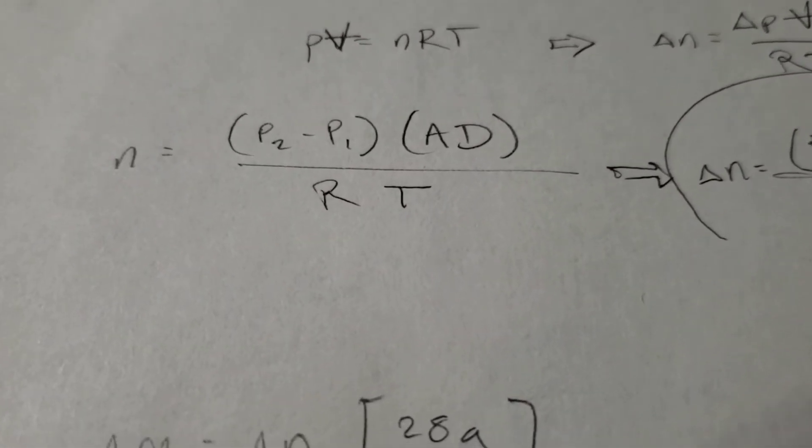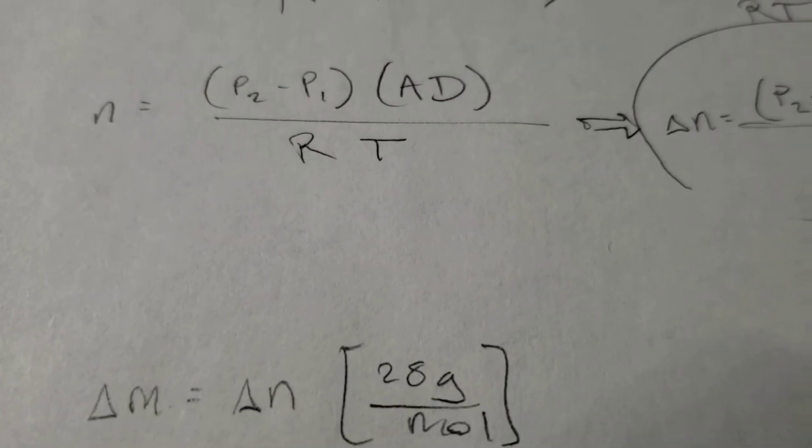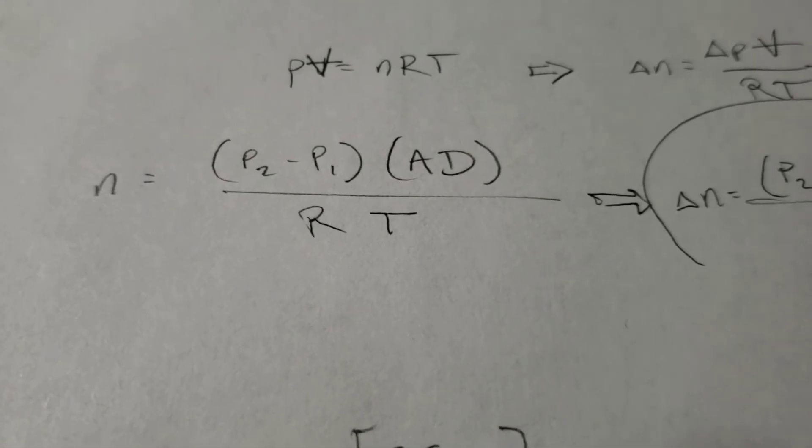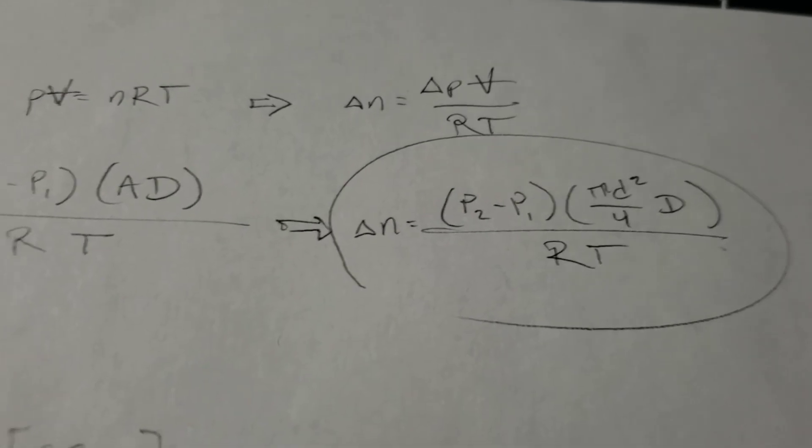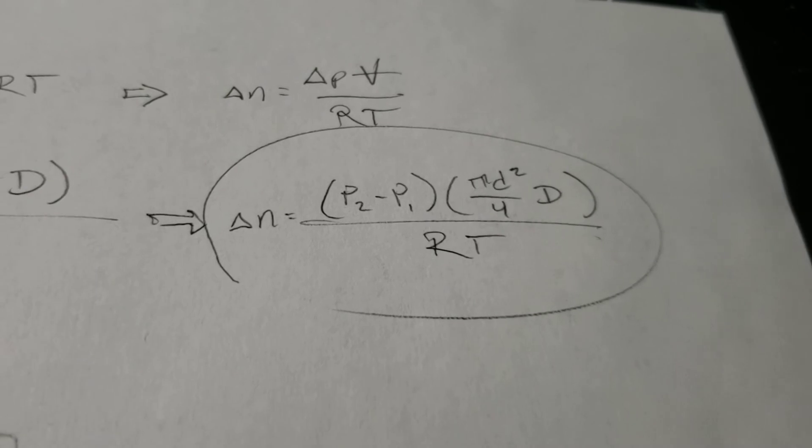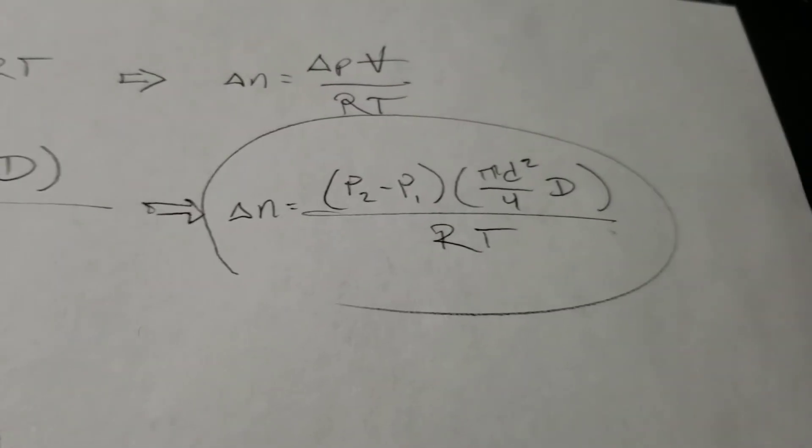And then all that's over RT. R is a constant that is given, or known, rather. And T is the temperature given the problem converted into Kelvin. So, expanding that out a bit further, we're going to break down area into pi D squared over 4, which is the formula for cross-sectional area.